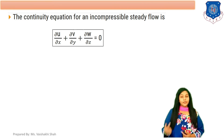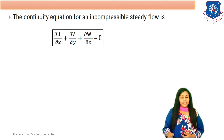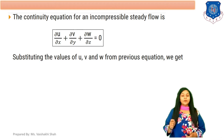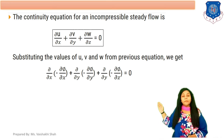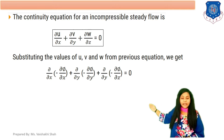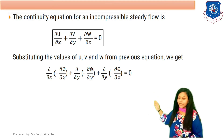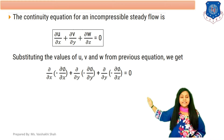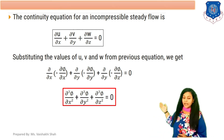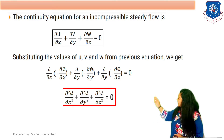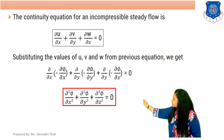We have the equations for u, v, and w: u equals minus del phi by del x, v equals minus del phi by del y, and w equals minus del phi by del z. Substituting these values into the continuity equation and simplifying, we get: del squared phi upon del x squared plus del squared phi upon del y squared plus del squared phi upon del z squared equals to 0.